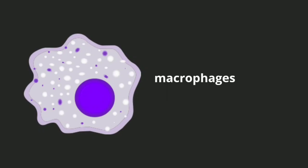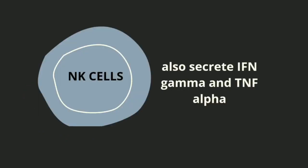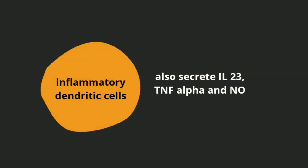Macrophages are part of the innate immune system and are also present in psoriatic skin lesions, but we don't know exactly how they contribute to pathogenesis. Natural killer cells secrete interferon-gamma and TNF-alpha — it's very important to remember these, as they are the same cytokines secreted by Th1 cells, and they are critical in the pathogenesis of psoriasis. Inflammatory dendritic cells, which form from the transformed dermal dendritic cells in psoriatic skin, secrete interleukin-23, TNF-alpha, and nitric oxide. Interleukin-23 contributes to activation of Th17 cells.